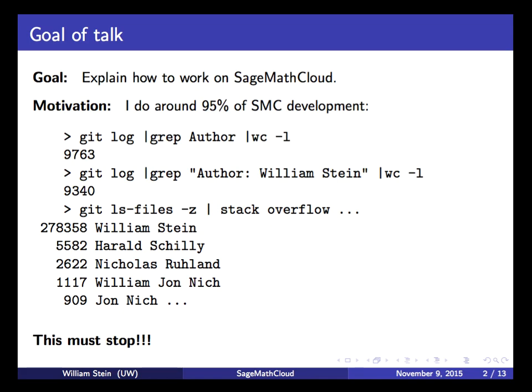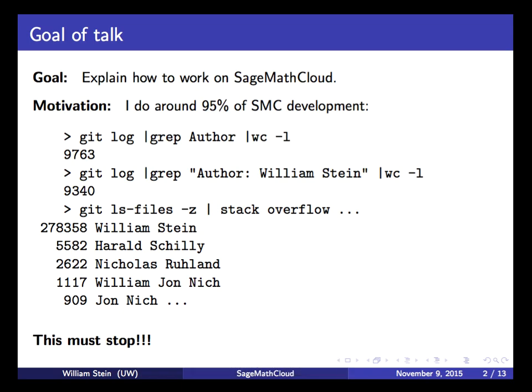If you look at the actual lines using Git blame information piped into a tool, these are the lines I modified versus other people. It's pretty depressing, and my goal is that this stops. My experience with doing lots of software development on one thing is that you get burned out. If I stop working on SMC and nobody else knows how to work on it, it will completely die.